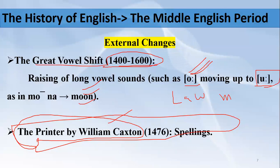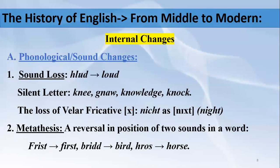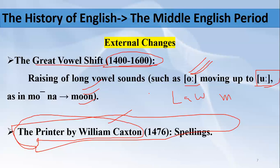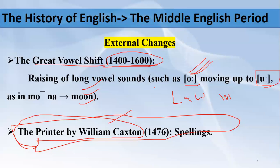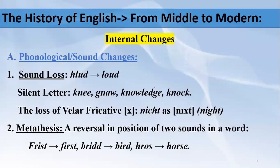So these are the four external factors which contributed to the development of Middle English. Now moving to the internal changes.